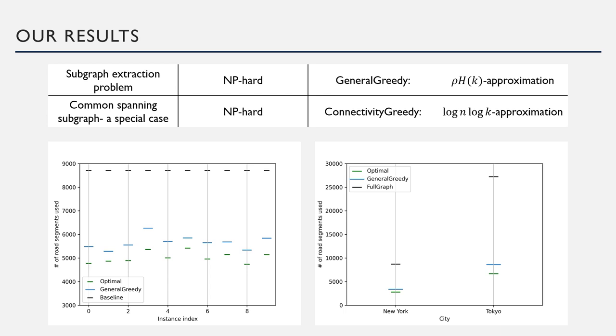We then tested the GeneralGreedy algorithm using synthetic data and also real life traffic data from New York and Tokyo. We observed that the GeneralGreedy outperforms the current baseline that the industry uses to extract subgraphs by a lot and is actually very close to the optimal.